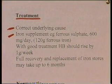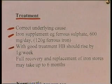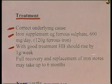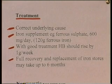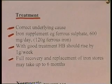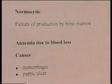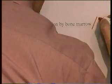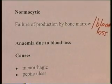With good treatment of iron-deficiency anemia, haemoglobin should rise by about one gram per week. Full recovery and replacement of reserve iron stores can take several months — up to six months in fact. Let's now think about normocytic anemia, caused by failure of production by the bone marrow or blood loss.